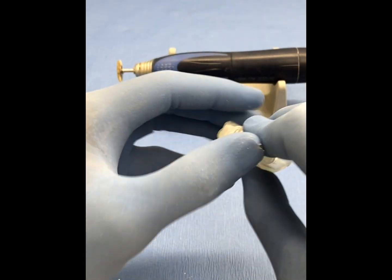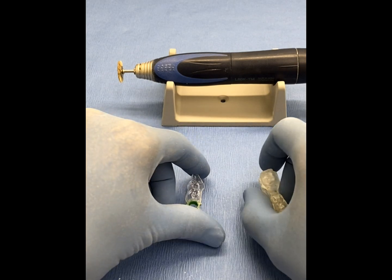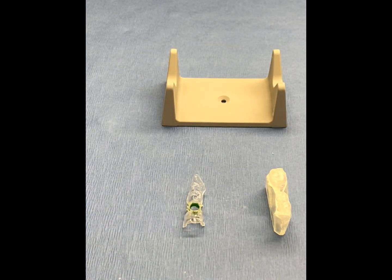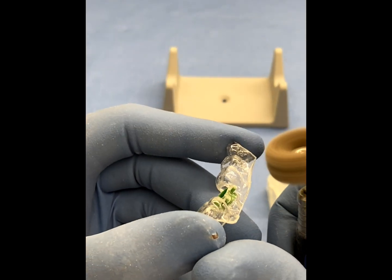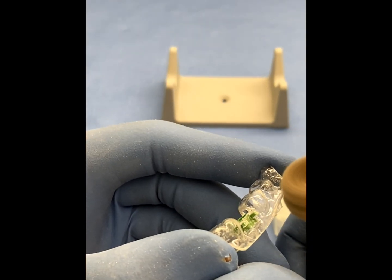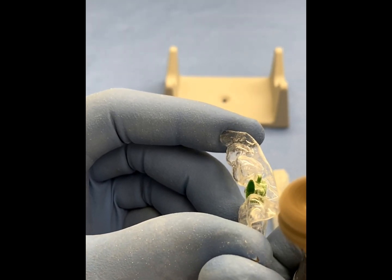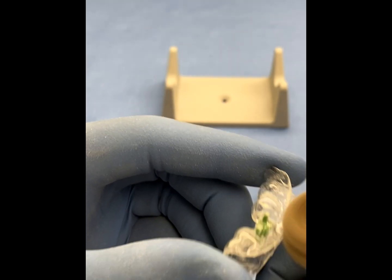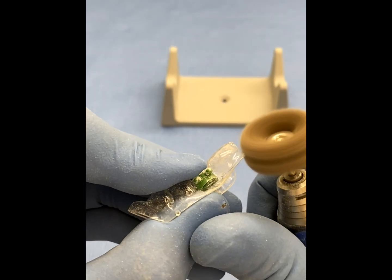The surgical guide should then be removed from the model, taking care not to deform the plastic during the removal process. The remaining outer surfaces of the surgical guide should then be trimmed using burrs, discs, and wheels to maximize retention, allow for the ease of placement inside the mouth, while also providing a comfortable fit for the patient.